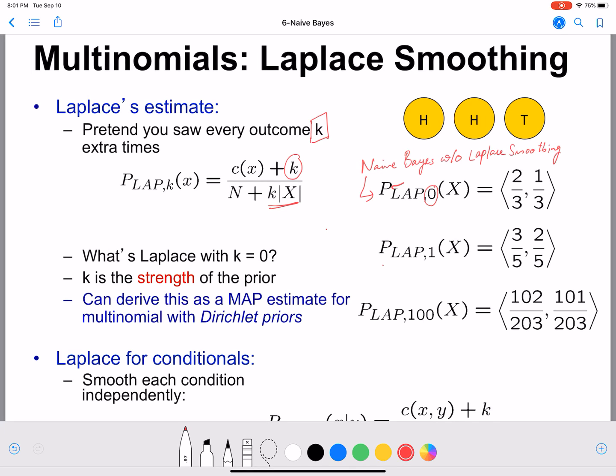When you have Laplace one smoothing, then what do you do? Substitute that in the formula. So we have two is our initial count plus k value is one, so we have one by total number of tosses that is three plus k times one times cardinality of X. So what is the cardinality of X here? How many different values are possible for X? X can take heads, X can take tails, so two different possible values.